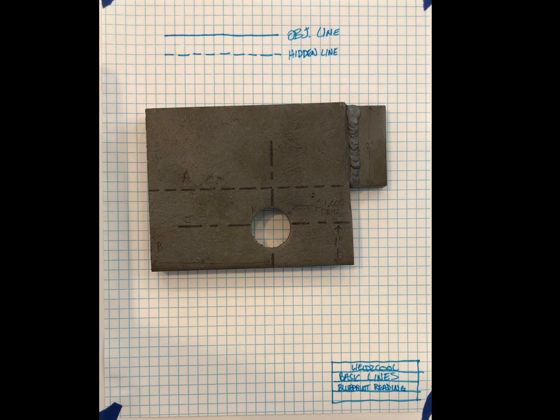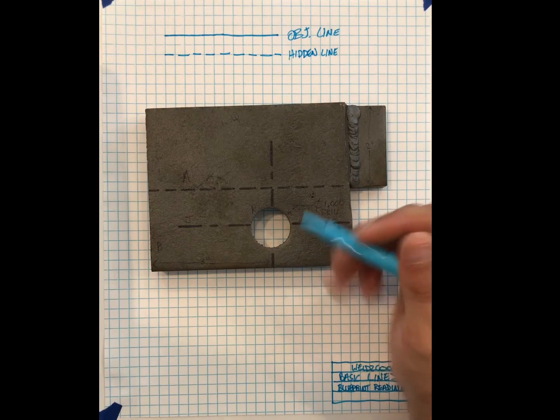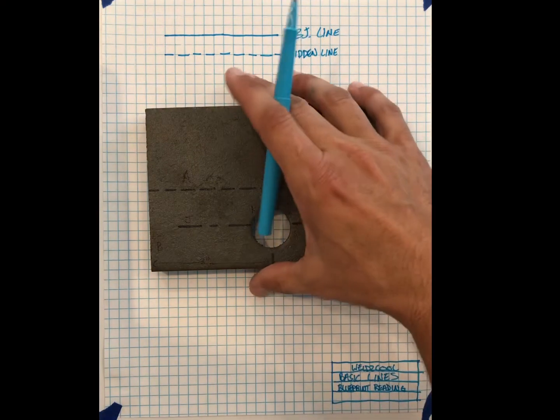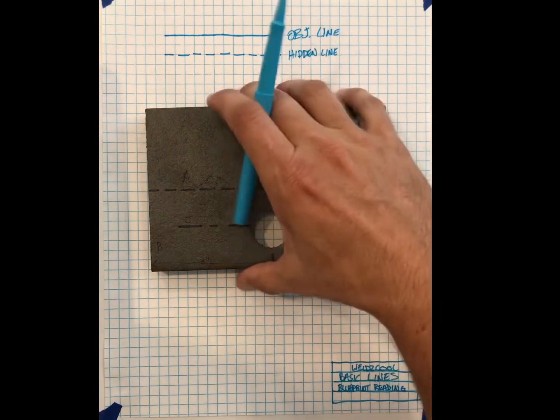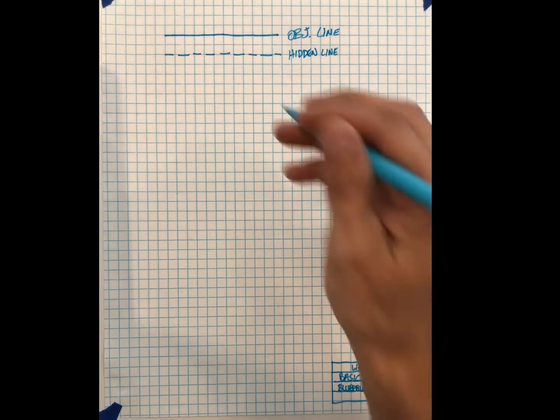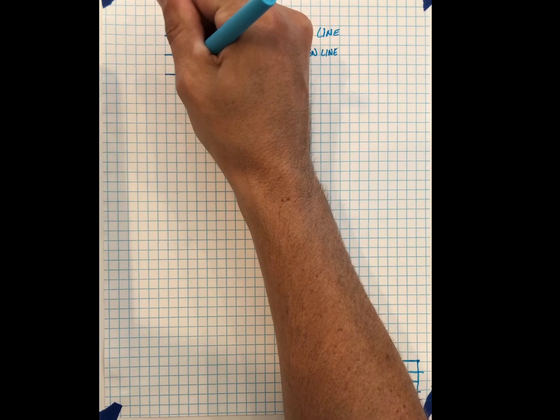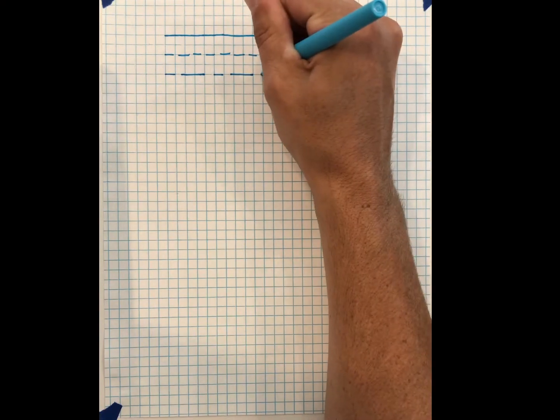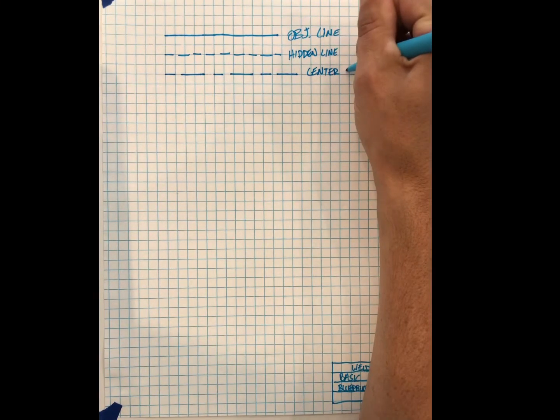Next one is a center line. Center of this circle going across or center of it going here. We could say that maybe we centered one piece on another piece. You're finding the center of that piece or hole or any other component that might be on there. With a center line, it's a fine broken line made up of a series of short and long dashes. I'm going to draw it a little bit lighter weight. So we got short, long, short, long, short, long, so on and so forth. And those are center lines.